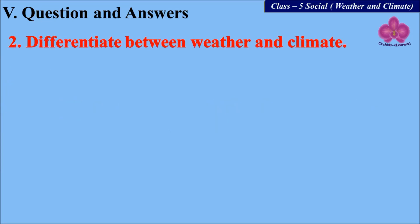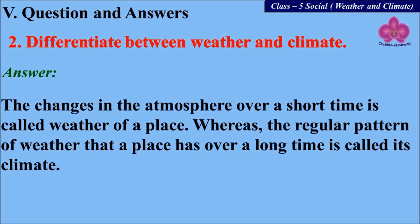Next question: differentiate between weather and climate. The changes in the atmosphere over a short time is called the weather of a place, whereas the regular pattern of weather that a place has over a long time is called its climate.